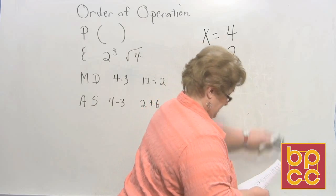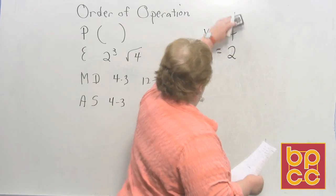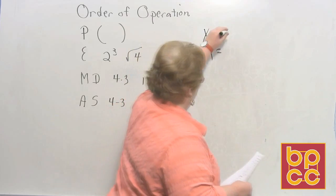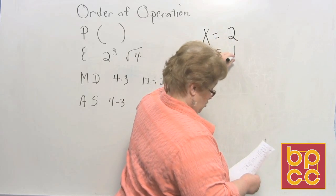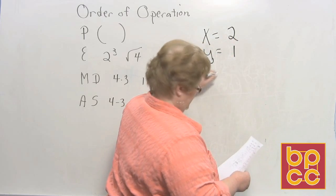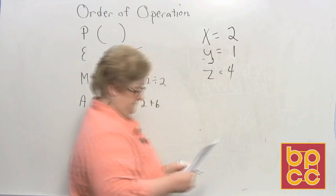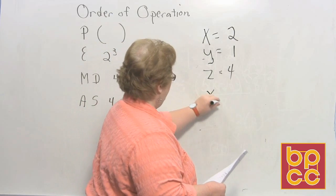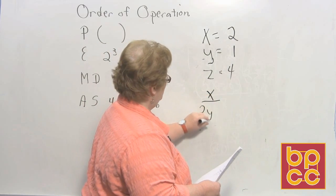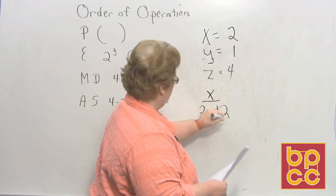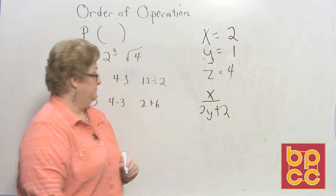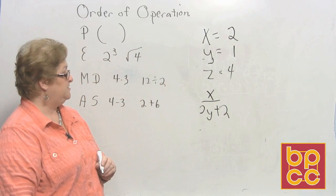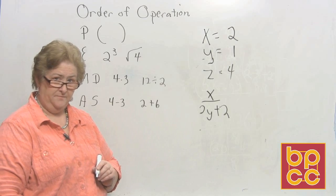Okay. This time, I'm going to let x be 2, y is going to be 1, and z will be 4. Okay. Are you ready? I'm going to go x over 2y plus 2. Okay. Here we go. We have an x on top and a 2y plus 2 on the bottom. All right. x is equal to 2. And on the bottom, 2 times y,